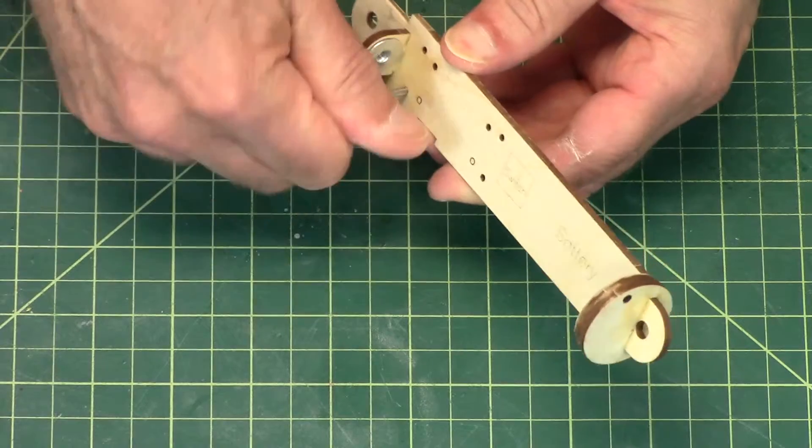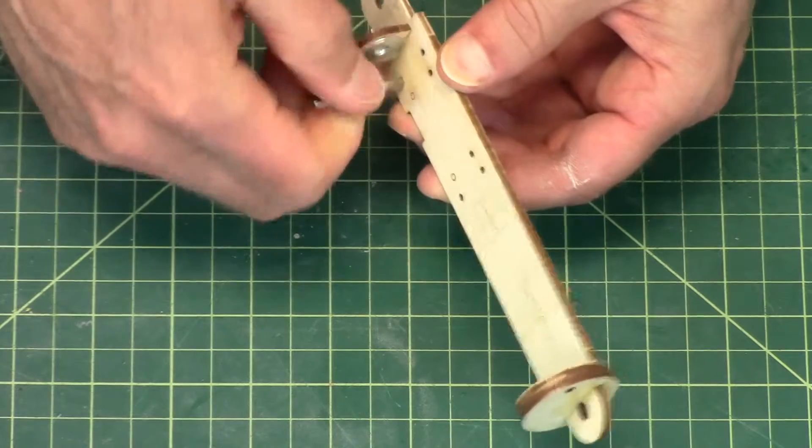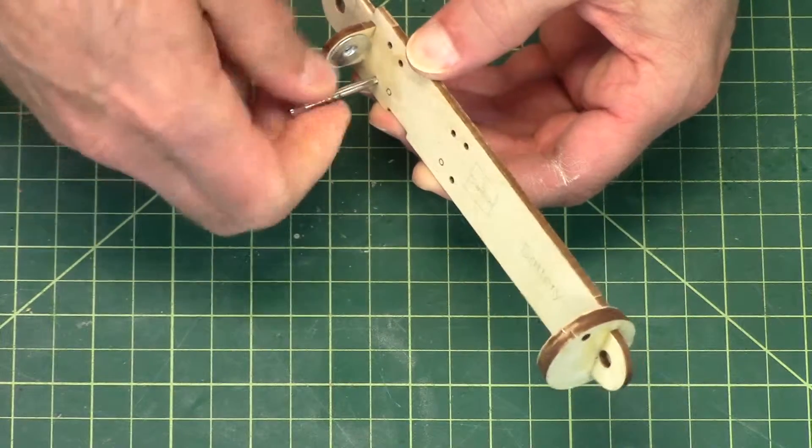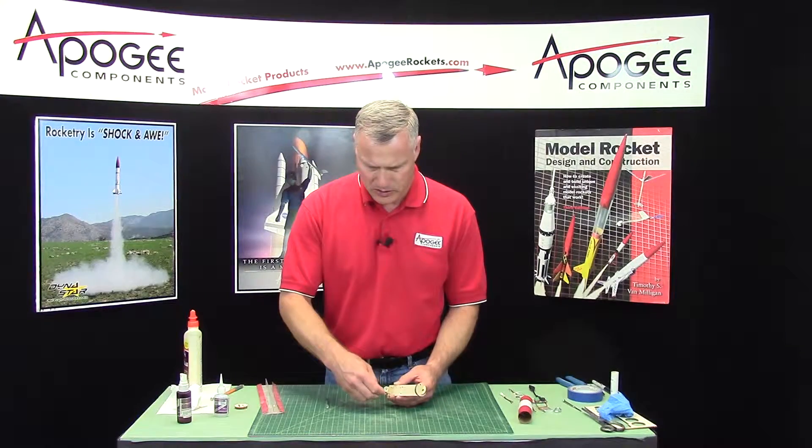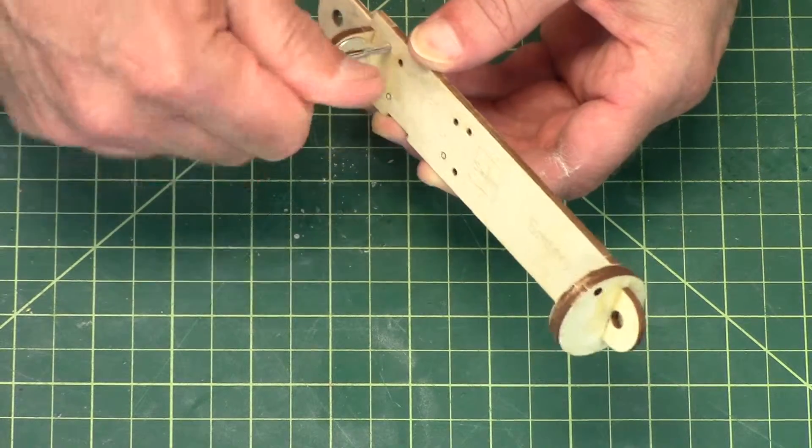And you can use your fingers for this. See how nice and easy that goes in? Go all the way down to where the threads stop on the tap and back it out. Go all the way down to where the threads stop. Just do all four holes.